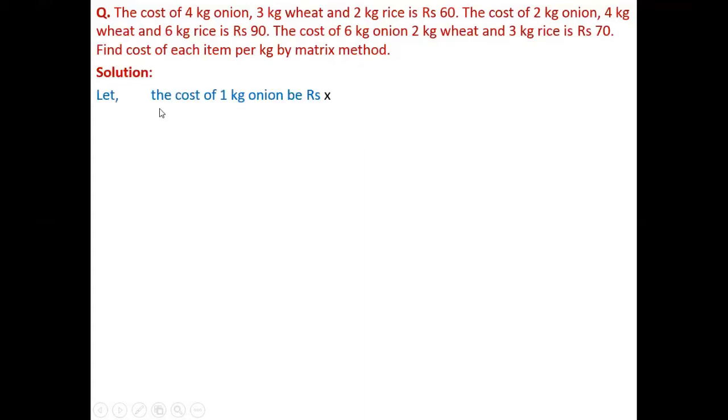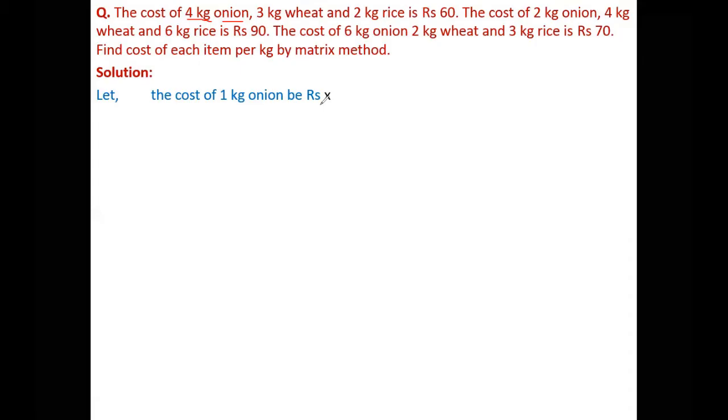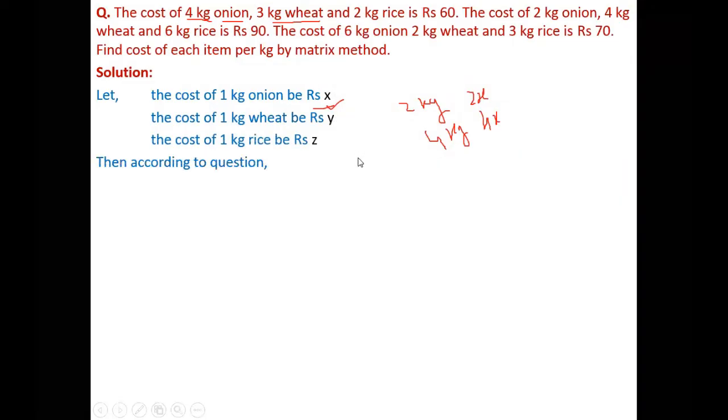Let us consider the cost of 1 kg onion be x. So I am considering the cost of 4 kg onion - if 1 kg costs x rupees, then 4 kg will cost 4x. Similarly I am assuming 1 kg wheat is y, so 3 kg will cost 3y. And 1 kg rice is z, so 2 kg is 2z. So ultimately 4x plus 3y plus 2z equals 60 rupees.